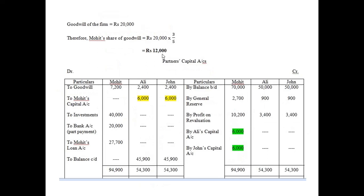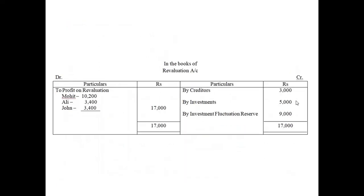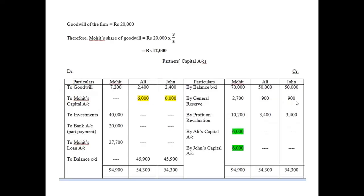We write 'By Balance b/d' — extracted from the balance sheet — as 70,000, 50,000, and 50,000. By general reserve, the amounts are 2,700, 900, and 900, shared between all partners. There is also a profit on revaluation of 17,000, appropriated between all partners as per the profit sharing ratio.